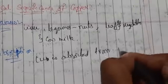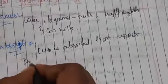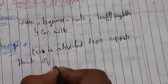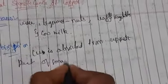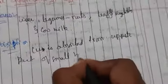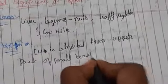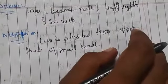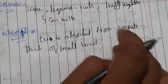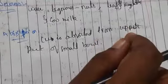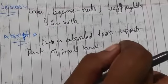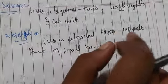Copper is mainly absorbed from the upper part of the small bowel. After absorption, it gets bound to albumin and plasma proteins.